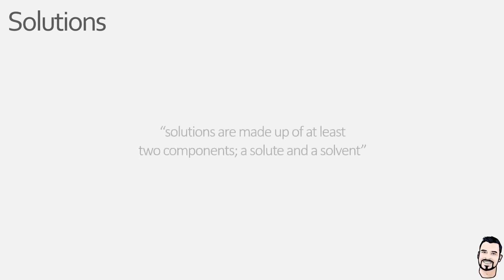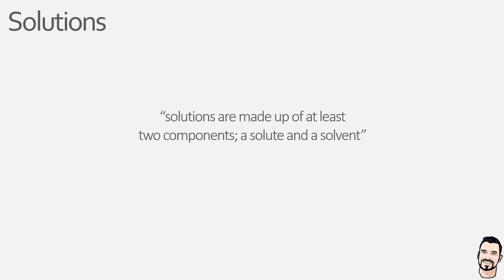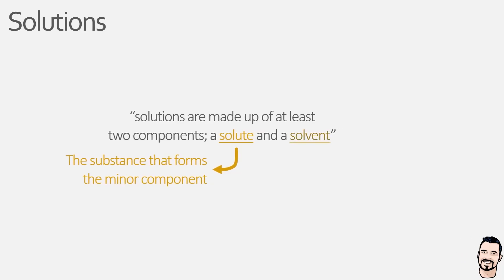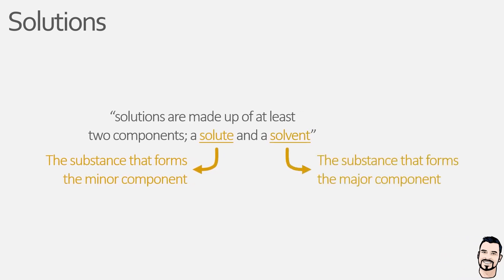In order to talk about this we need to understand what it is to be a solution. In its most common form a solution is a liquid made up of two components. The first is the solute and this forms the minor component of the solution. Essentially it is being dissolved in the solvent which forms the major component of the solution. Therefore something can be both a solute or a solvent depending on if it is more or less of something it is being added to.